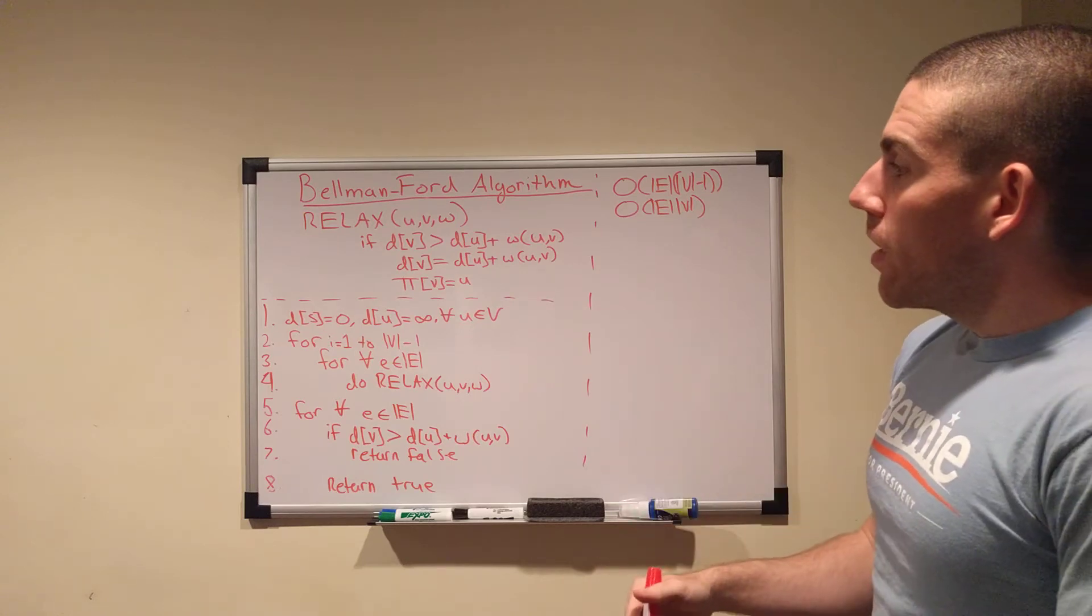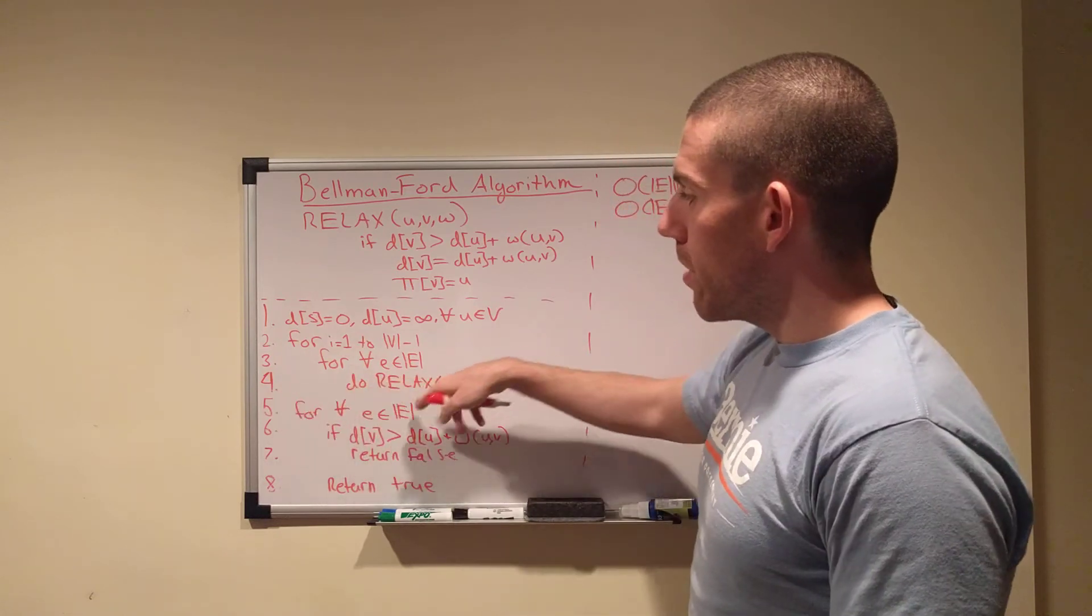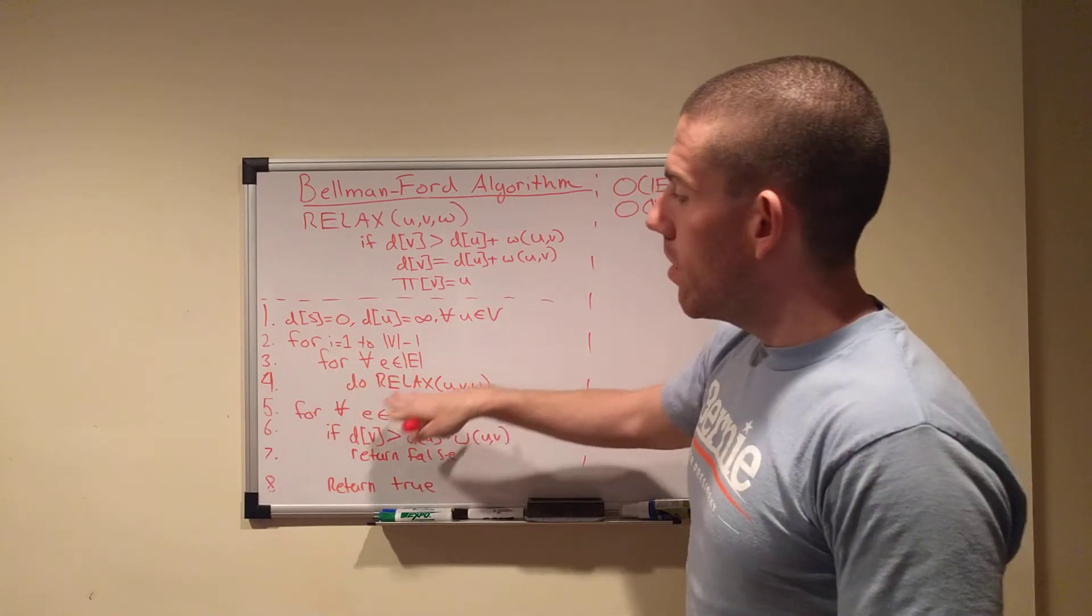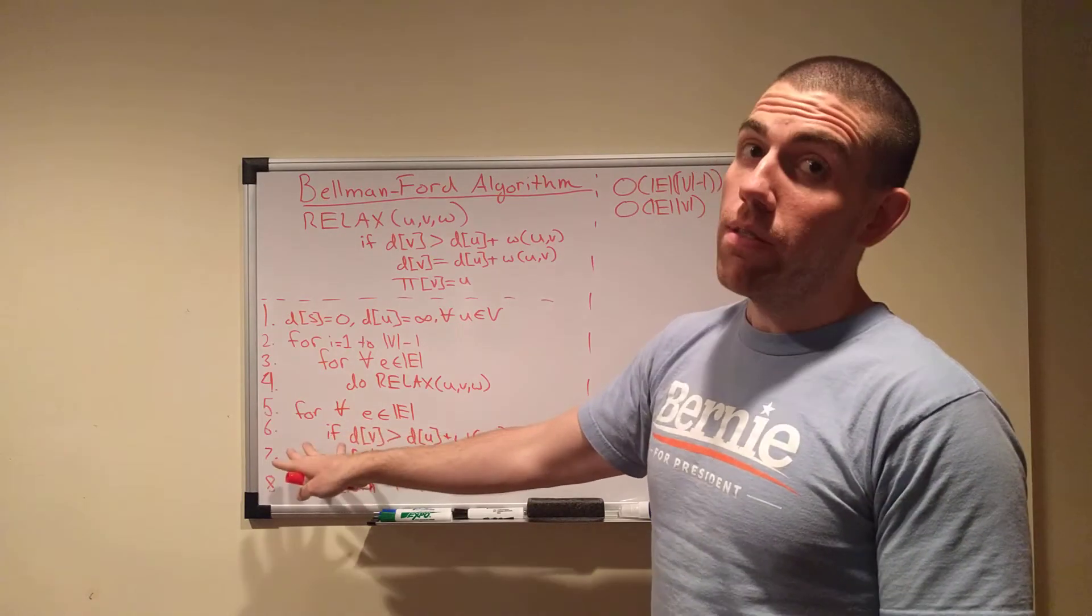Even the failure is useful. So, yeah. Lines 2 through 4 actually do the relax and compute the shortest paths. Lines 5 through 8 check for a negative cycle. So, that's what's going on.